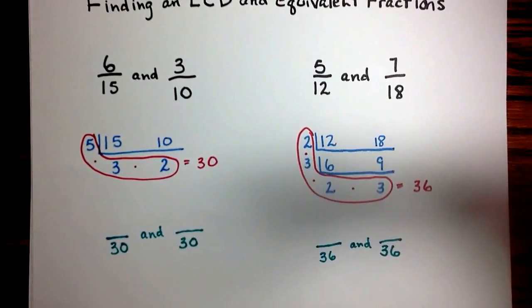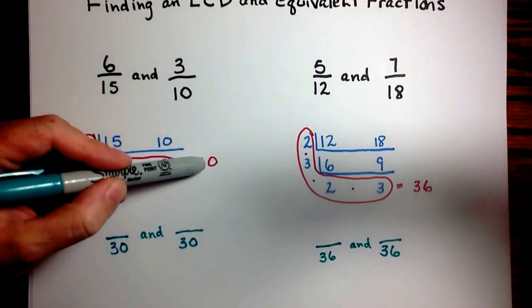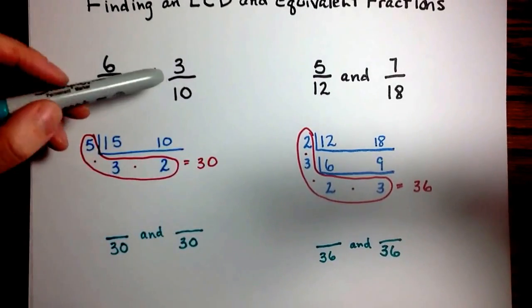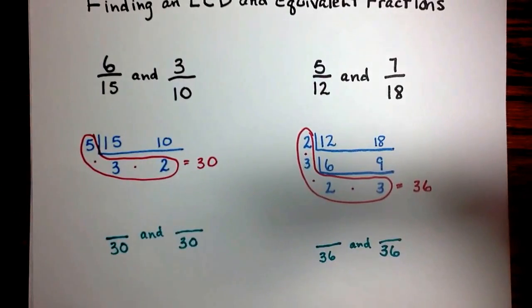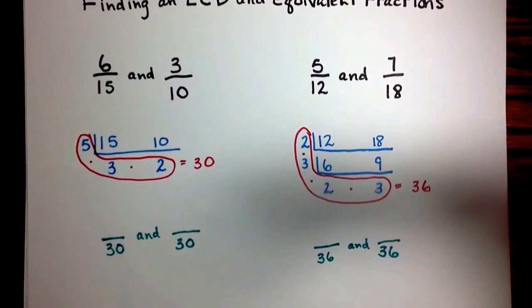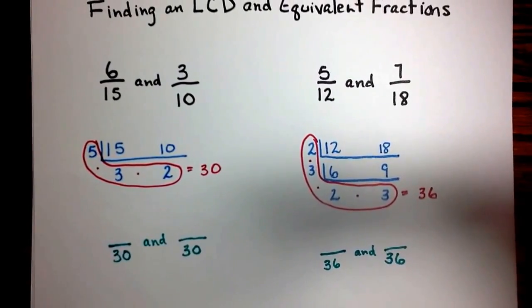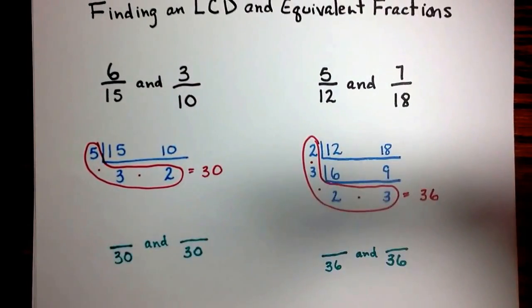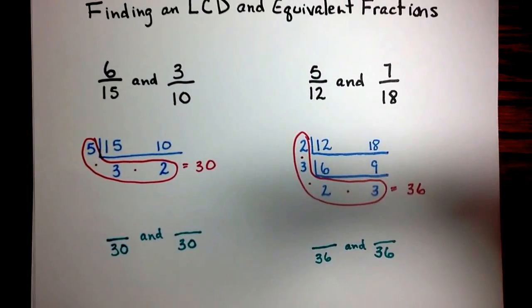So the question that we're asking is, what do I need to multiply 15 by in order to get to 30? And what do I need to multiply 10 by in order to get to 30? Now those are probably math problems that you could figure out in your head, but I want to show you how this inverted division that we've created will also give us that answer, in the case that you get some bigger numbers in your denominator that you don't automatically know what their multiples are.